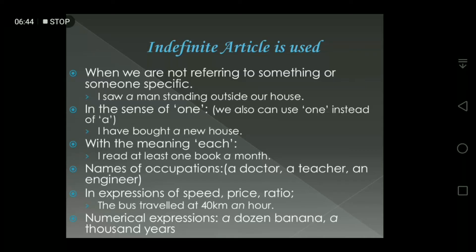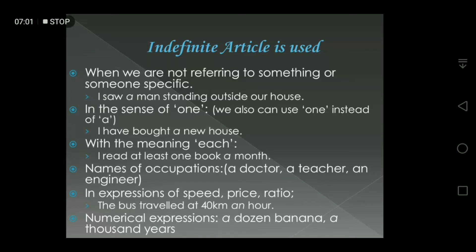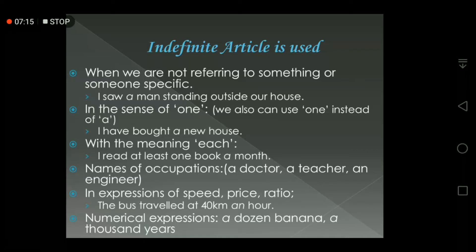Sometimes you can use 'one' instead of 'a' — the meaning will be the same. For example: 'I have a shirt' and 'I have one shirt' mean the same. Also, 'a' is used with the meaning of 'each' — for example: 'I read at least one book a month', meaning each and every month I read one book. Additionally, with names of occupations — when talking about someone's job, use 'a' or 'an', such as a doctor, a teacher, an engineer.